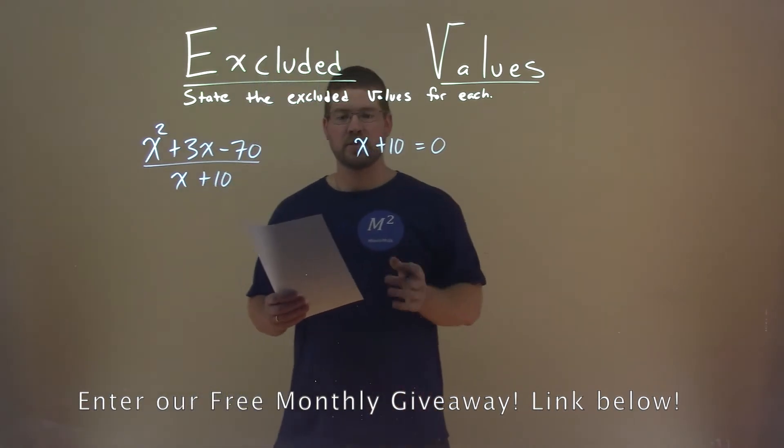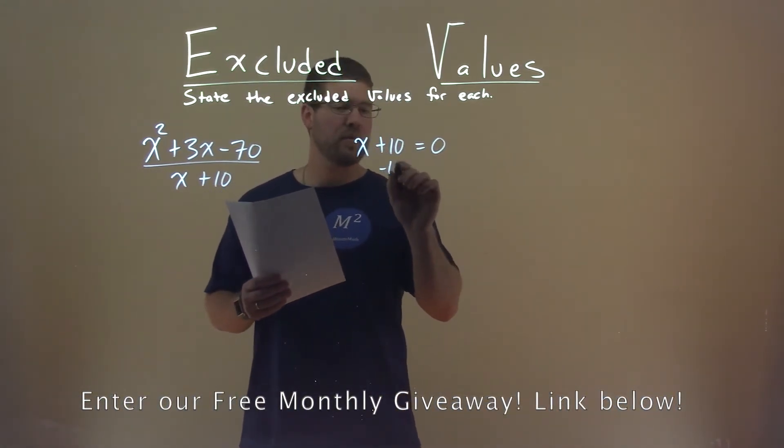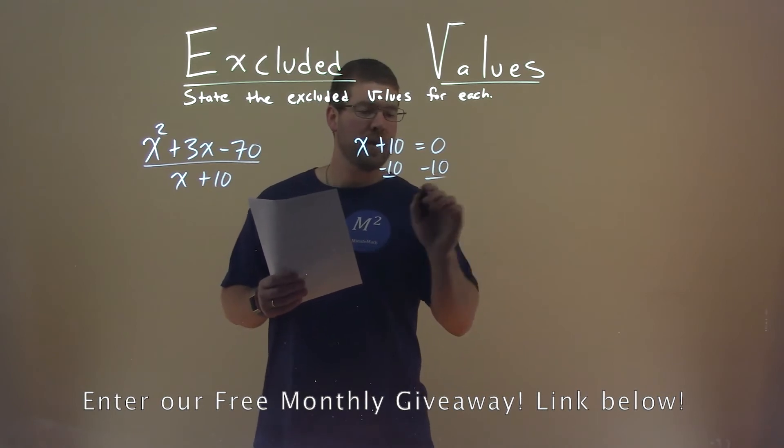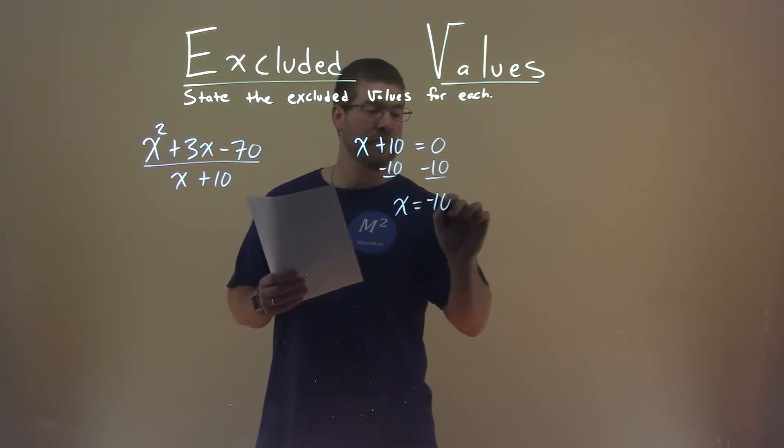Now we're going to solve for x. Pretty simple now. Subtract 10 from both sides, and x equals, well, negative 10.